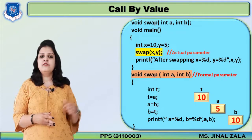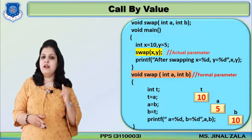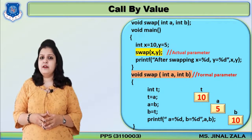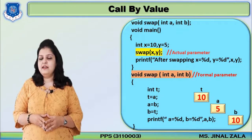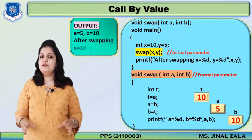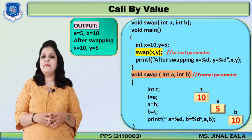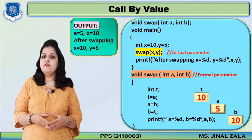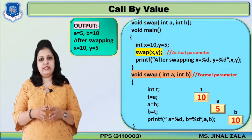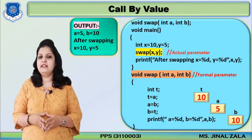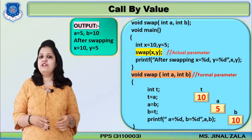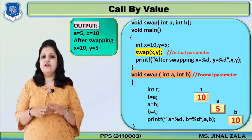Now control returns to the main function, and after the function call there is another printf statement printing the values of x and y. But since we only passed the values of x and y — not their addresses — the whole process was done on the formal parameters a and b. So x and y remain unchanged: x is still 10 and y is still 5. This is the key behavior of call by value — even though you applied the swapping logic, the actual parameter values are not swapped.